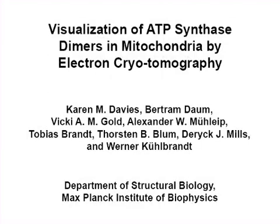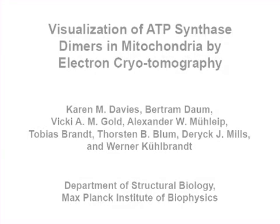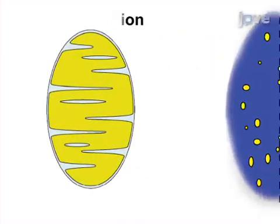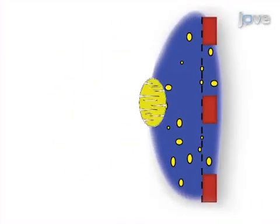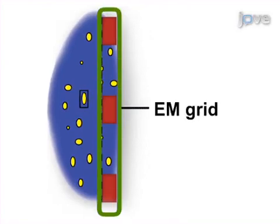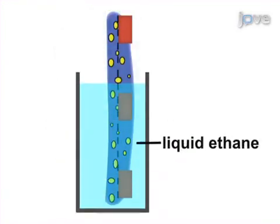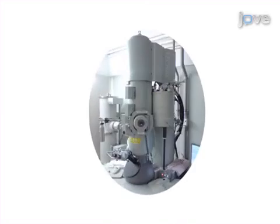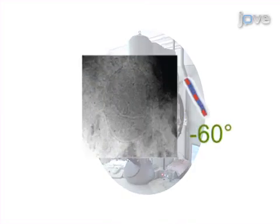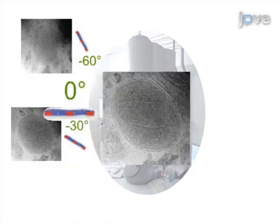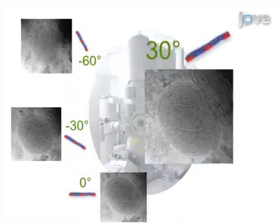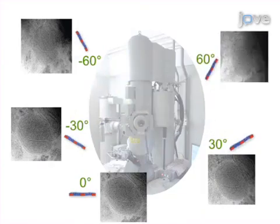The overall goal of this procedure is to determine the structure and organization of mitochondrial proteins in situ. This is accomplished by first generating a frozen hydrated electron microscope grid containing the sample. Next, a dose-limited tilt series of the sample is recorded in an electron cryomicroscope.